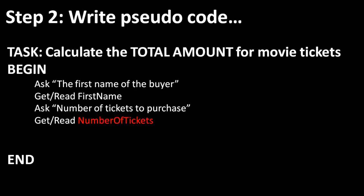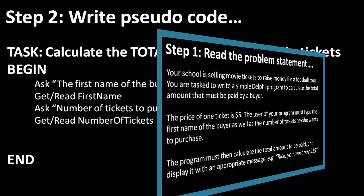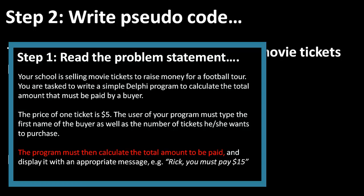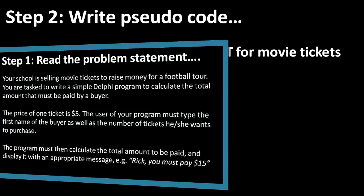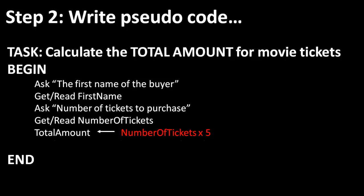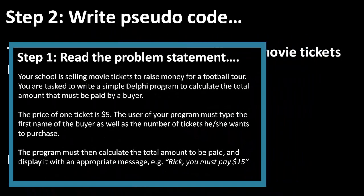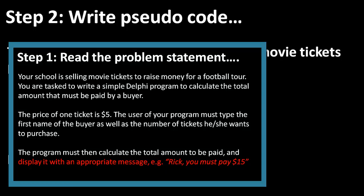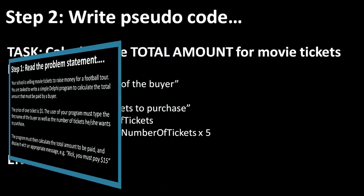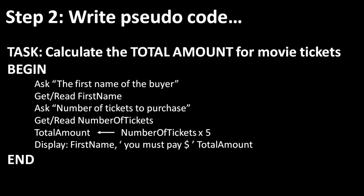Now that you have the inputs, you must process them, because the problem statement says the program must calculate the total amount to be paid. I must multiply the value in the number of tickets placeholder by 5, since the price of one ticket is $5. The result is then assigned to a placeholder called total amount. In zero code, we use an arrow to indicate that the result of an expression on the right side is assigned to the placeholder on the left side — that is also the way we assign values in Delphi code. The problem statement also instructs you to display the result with an appropriate message, for example, Rick, you must pay $15. This will be the output, and I add that instruction to my zero code.